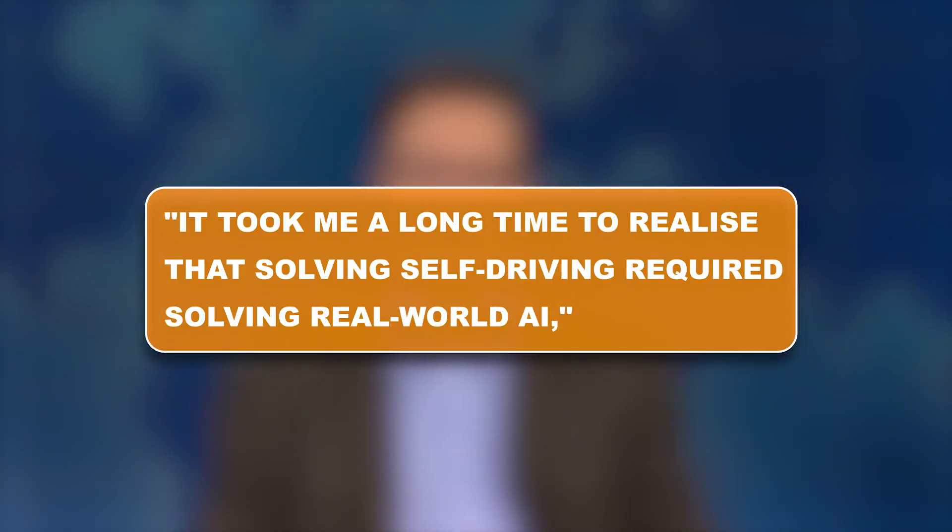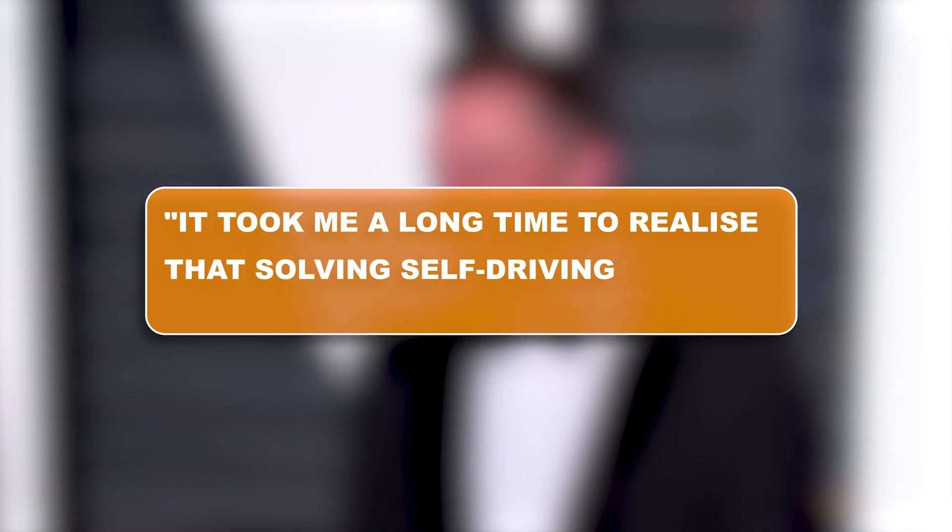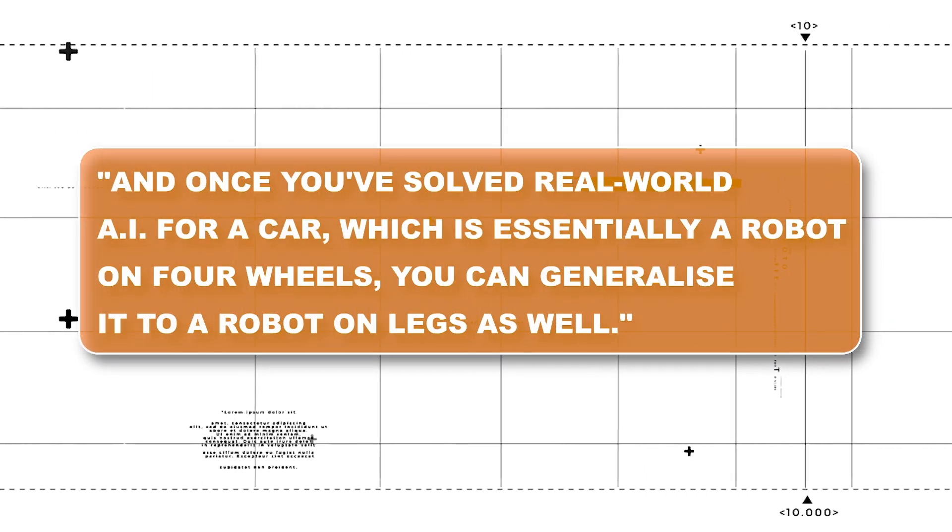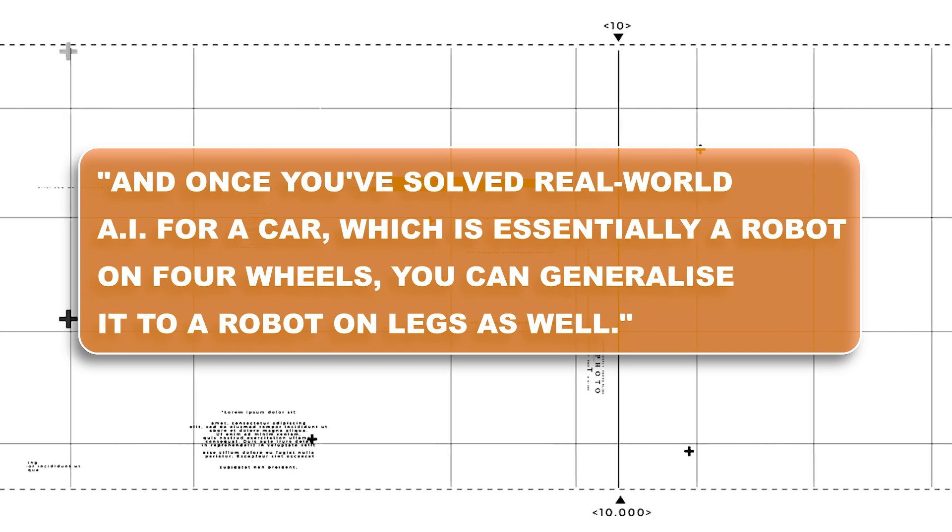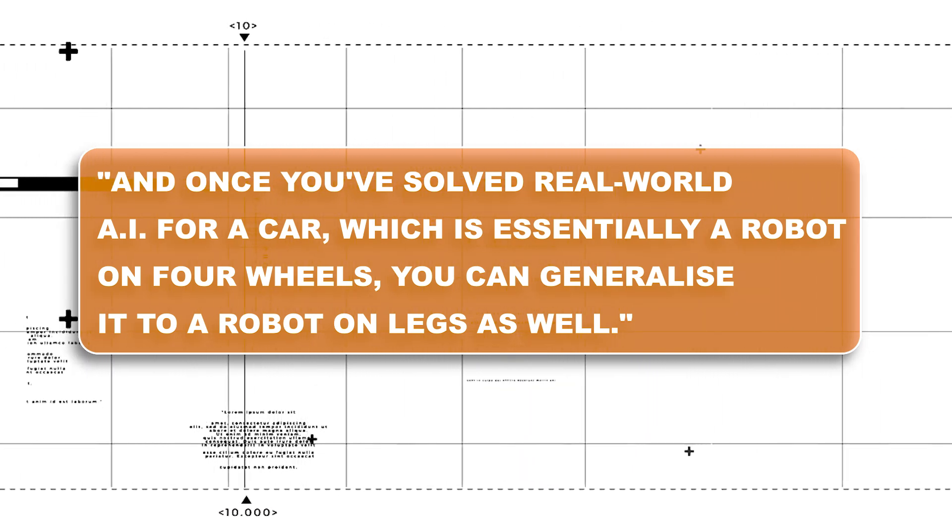It took me a long time to realize that solving self-driving required solving real-world AI, Musk explains. Once you've solved real-world AI for a car, which is essentially a robot on four wheels, you can generalize it to a robot on legs as well.